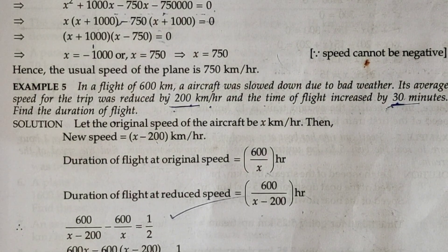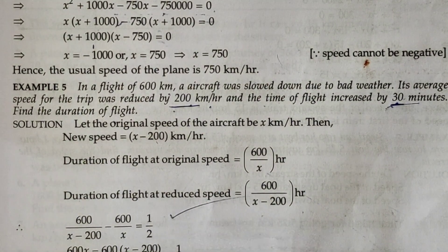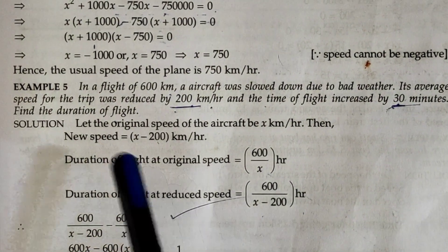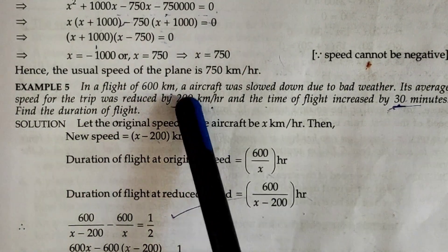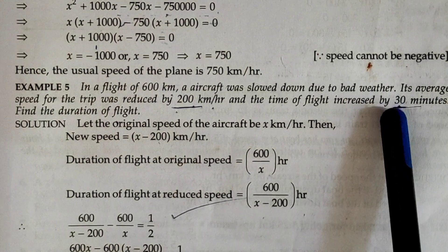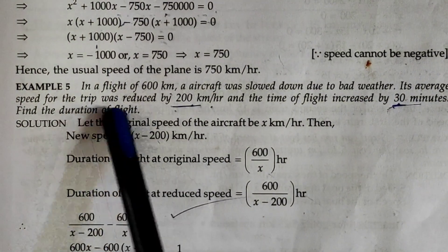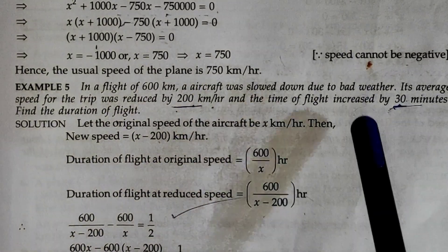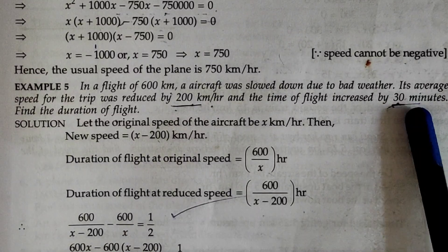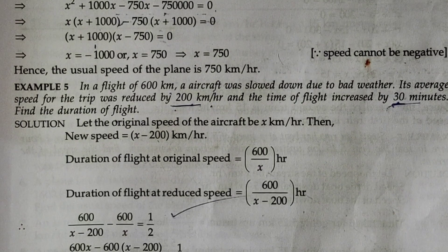If I ask the 5-mark questions, in the NCERT, there are some types of questions. Here is one: in a flight of 600 km, an aircraft was slowed down due to bad weather. Its average speed was reduced by 200 km per hour, and the time of flight is increased by 30 minutes. Find the duration of the flight.